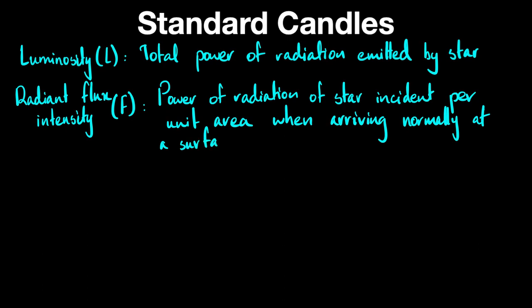We talked about this last time. The formula which links luminosity and radiant flux intensity is F = L/(4πd²). This is all you need to know for your exam.